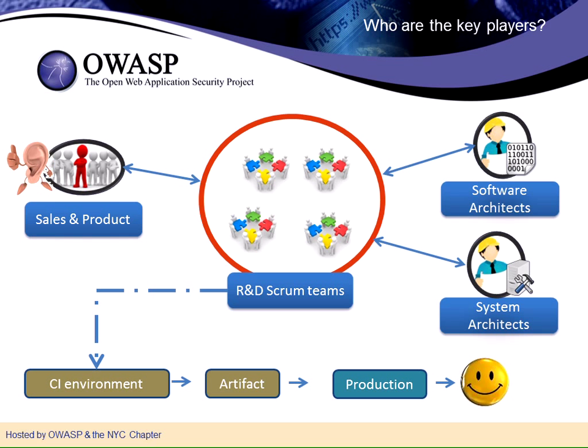LivePerson today includes 22 scrum teams and about 200 developers in R&D. Each scrum team includes members such as scrum master, product owner, QA, and developers. When you look at this flow, you understand that Agile is about an adaptive approach, but it's not chaos — you work in an environment that's a stable framework allowing the different scrums to add to this infrastructure.